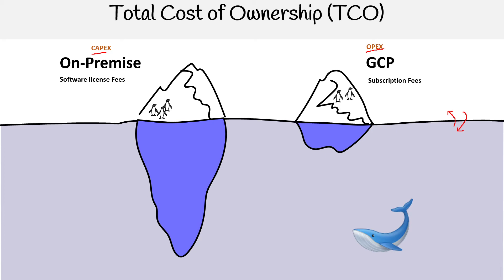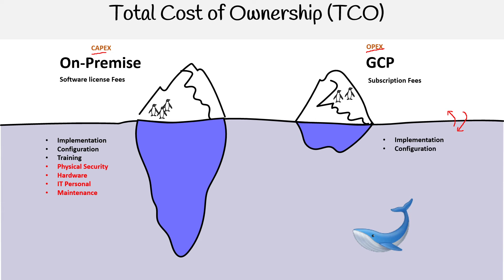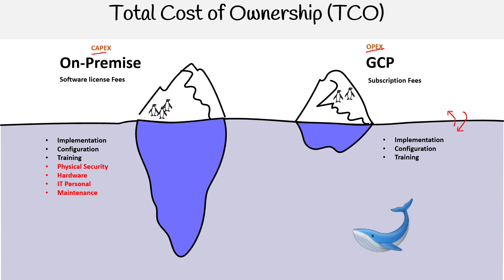But then when you get below the surface — remember, on-premise you have control, you have those physical machines there. So there's the implementation, the configuration, the training, the physical security, the hardware, the IT personnel, the maintenance. There's a lot of cost in actually having those physical machines and everything around them. Whereas with a cloud service provider, you worry about implementation, configuration, and training on how to use cloud services, but not all that other physical stuff. You can save up to 75% by shifting over to a cloud service provider. All that physical stuff in red is now the cloud service provider's responsibility — you don't have to worry about it.